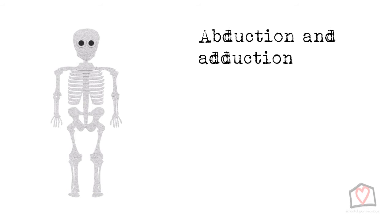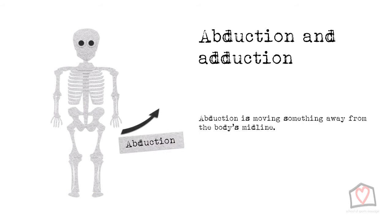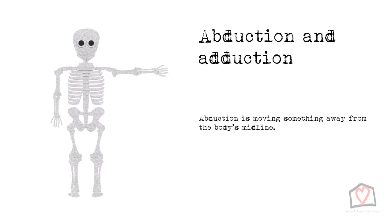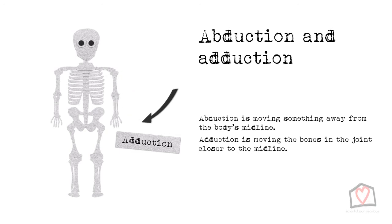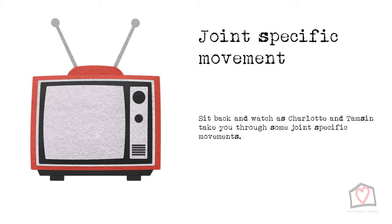Abduction and adduction are the other two most general movements. Abduction refers to moving something away from the body's midline, such as raising your arm at the side of your body — this is easy to remember as if you are abducted, you are taken away. Think abducted by aliens. Adduction, however, is moving the bones in the joint closer to the midline — in this example, bringing your arm back to your side. Adduction: adding to the body.